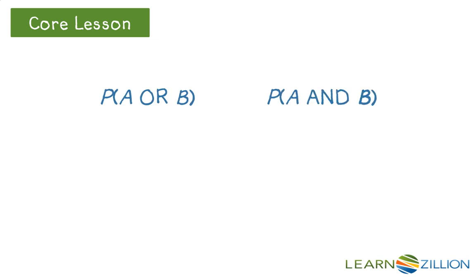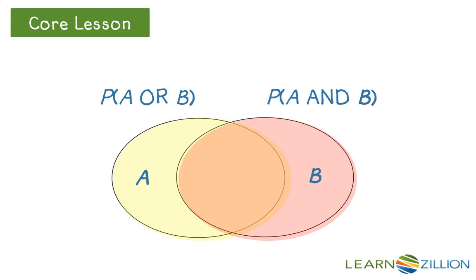Finally, let's compare the probability of the union of A or B to that of the probability of the intersection. Since the union represents A, B, and A and B—the yellow, red, and orange sections—